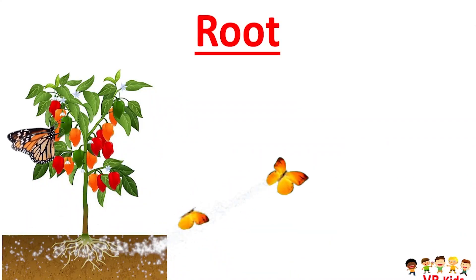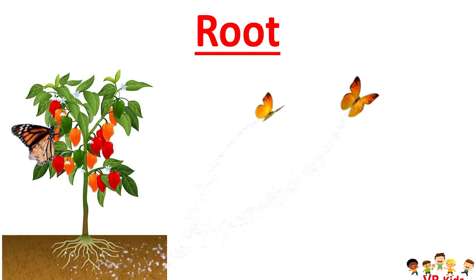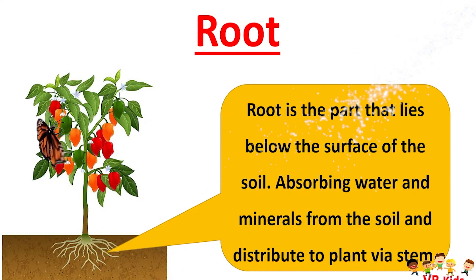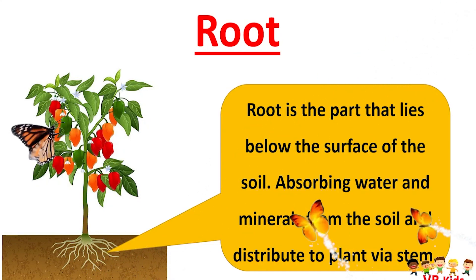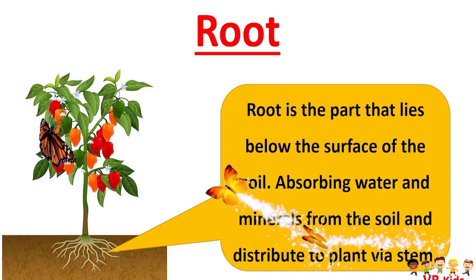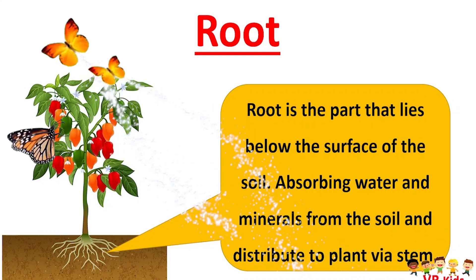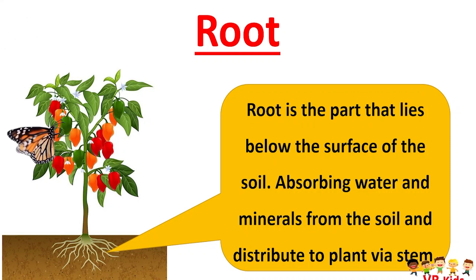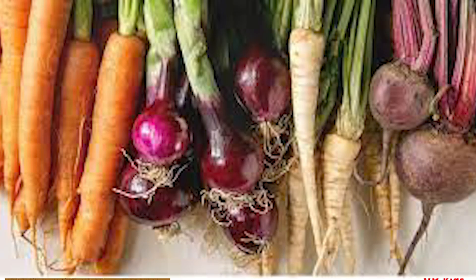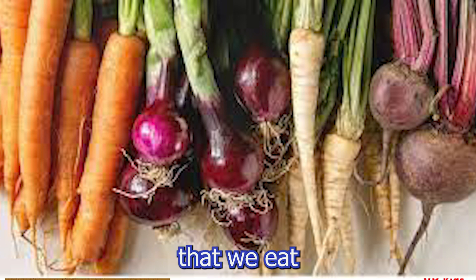Root is the part that lies below the surface of the soil, absorbing water and minerals from the soil and distributing them to the plant via the stem. Some examples of roots that we eat are carrot and beetroot.